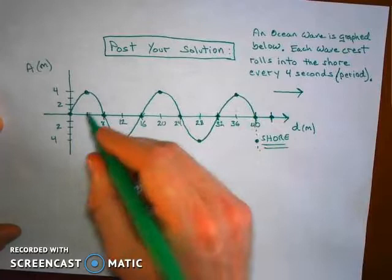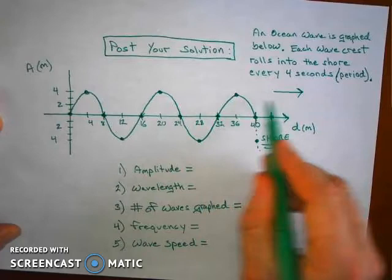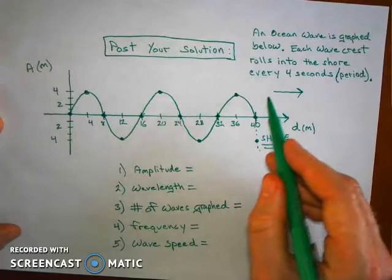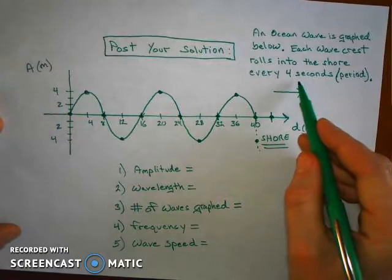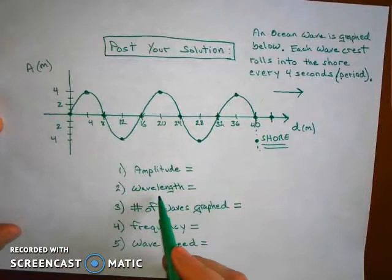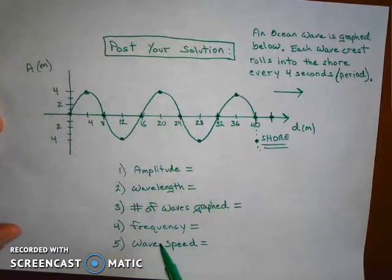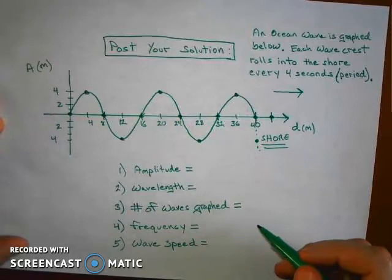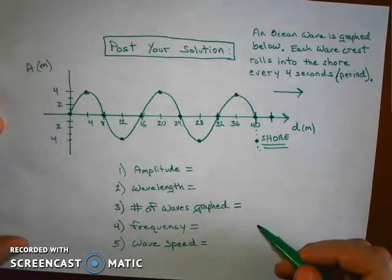If we imagine this wave is moving from left to right, it's crashing into the shore every four seconds. So if each crest passes every four seconds, that's its period. And given that information, if you could imagine this wave rolling horizontally to the right with a period of four seconds, you could figure out its amplitude from the graph. You could figure out its wavelength. You can count how many waves are graphed. How many waves do you see here? You could determine the frequency to which this wave is passing. How many waves occur each second? And then you can determine the wave speed. Post your answers, numbered one through five with units, and I will reply.